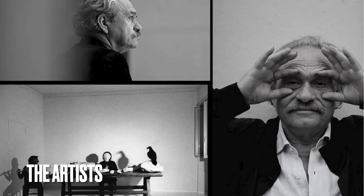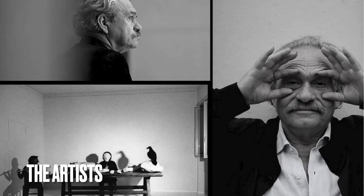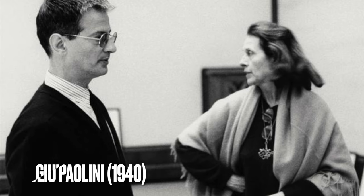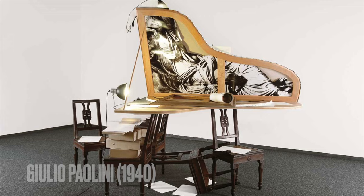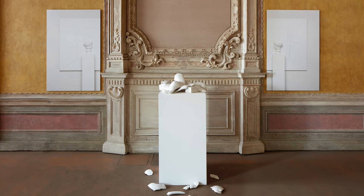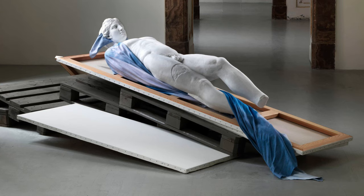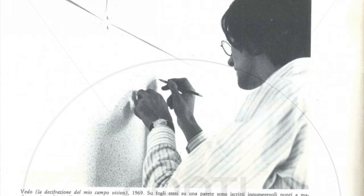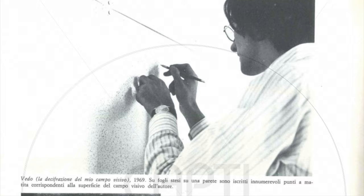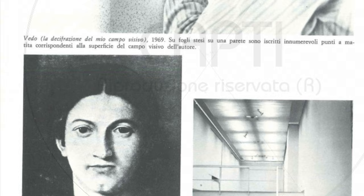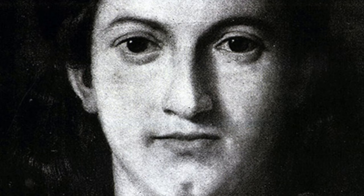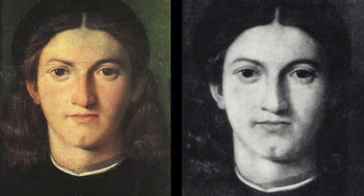Giulio Paolini's exploration focuses on language, the role of the artist, and expressive methods. He is the most conceptual among the poor artists, and the first to speak of the poverty of art. His practice extensively employs photography and quotations from past art. An example is his early masterpiece, Young Man Looking at Lorenzo Lotto from 1967, a photographic reproduction of Lorenzo Lotto's work Portrait of a Young Man, accompanied by a caption explaining the artist's attempt to recreate the point occupied by the author in 1505 and the contemporary viewer of the painting.